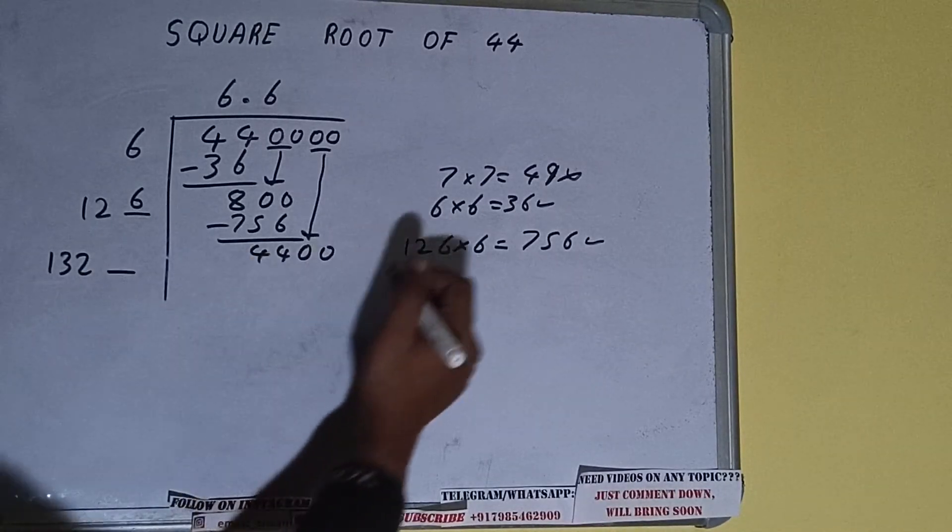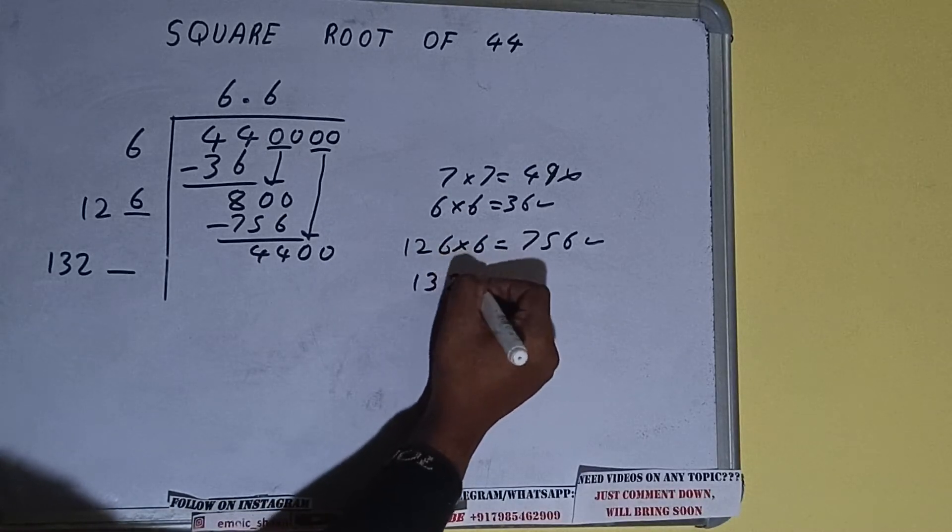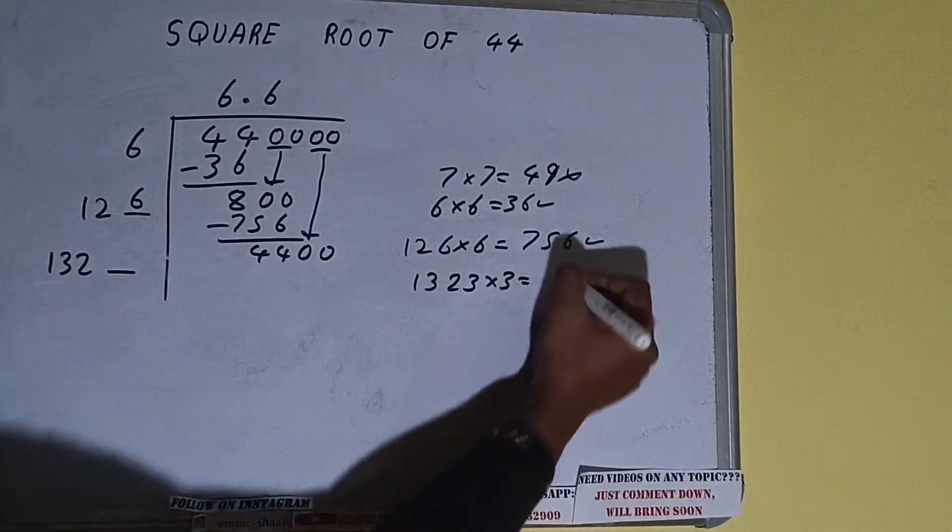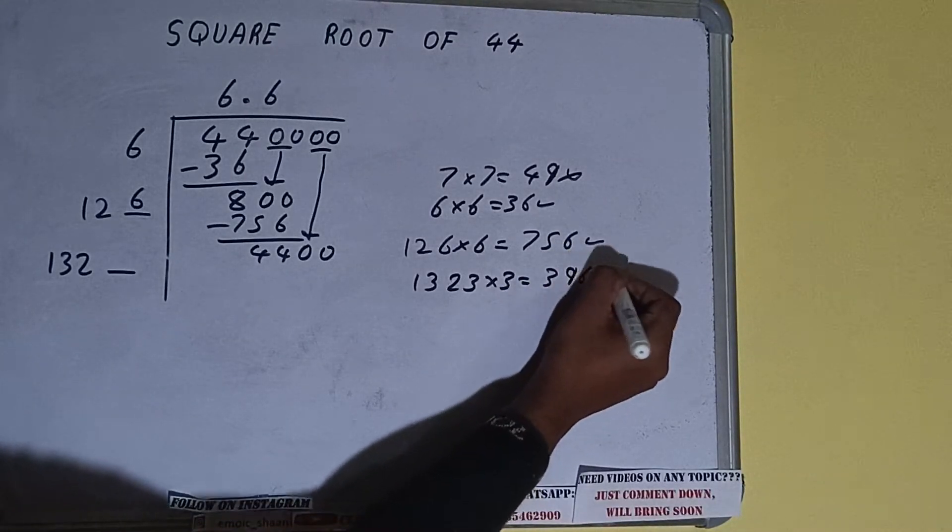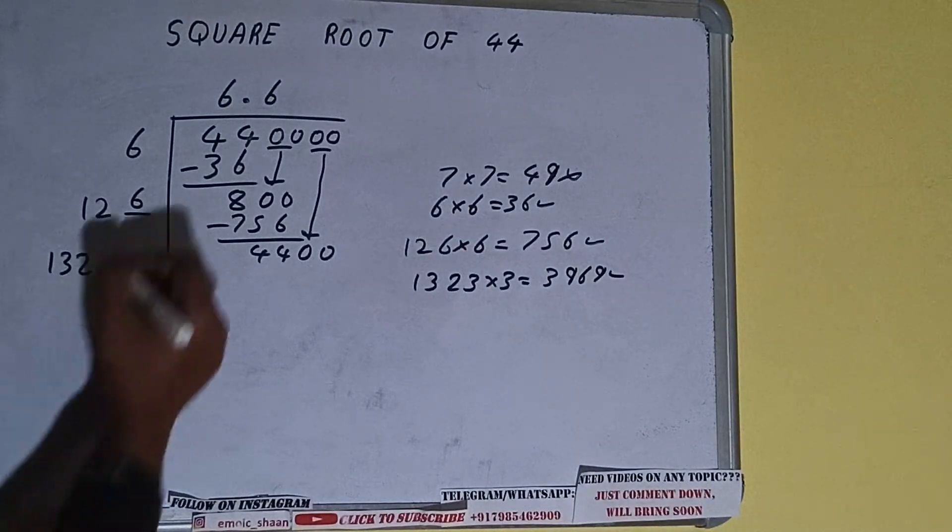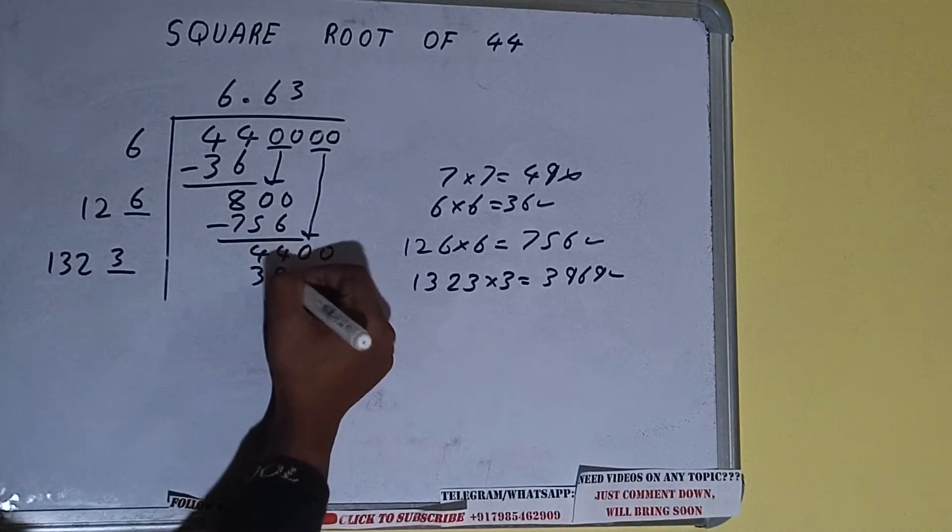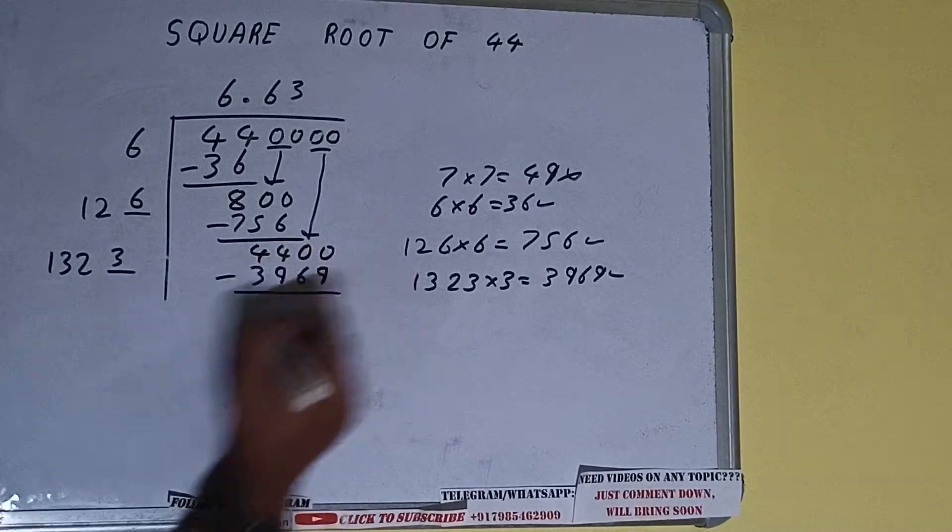1323 into 3 we can try. It will be 3969 which is good to take. So 3 here and 3 here, 3969, subtract it.